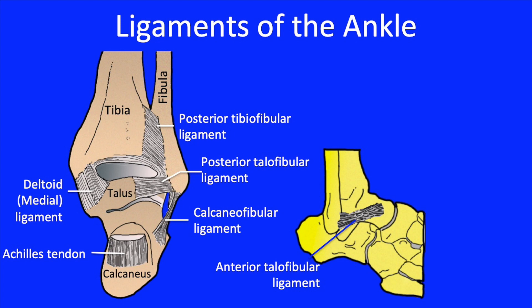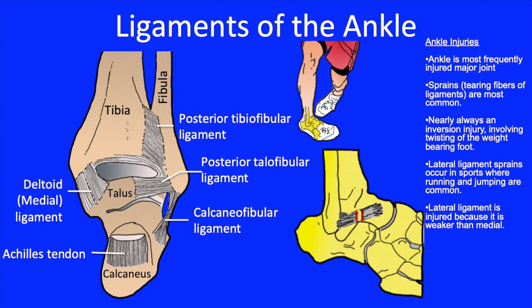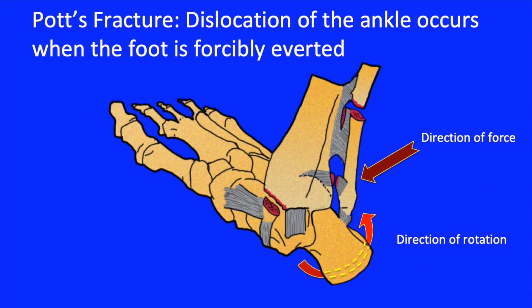The ankle is the most frequently injured major joint of the body. Sprains — the tearing of ligament fibers — are the most common type of ankle injury, and nearly always involve an inversion injury with twisting of the weight-bearing foot. Lateral ligament sprains occur in sports where running and jumping are common, because the lateral ligament is weaker than the medial ligament.